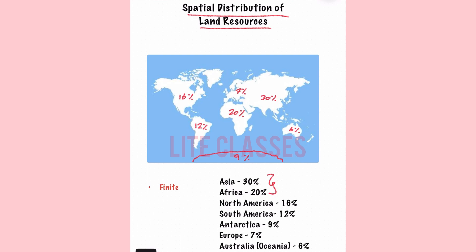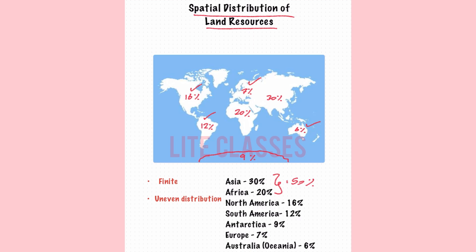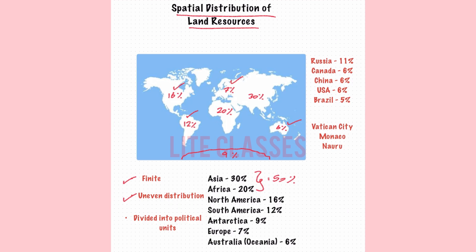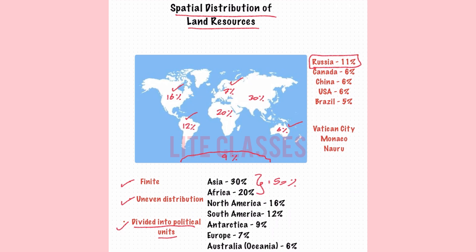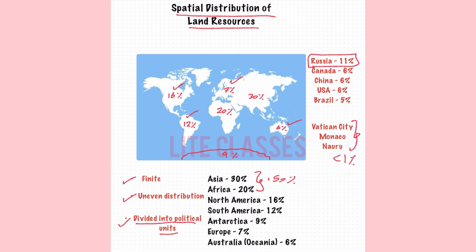Continent-wise, Asia and Africa together account for approximately 50% of the world's total land. North America accounts for 16%, South America 12%, Europe 7%, and Oceania 6%. So land resources across the world are not just fixed but also unequally distributed. They are further divided into political units, with countries like Russia having more than 10% of the world's land, while some of the smallest countries like Vatican City, Monaco, and Nauru together have less than 1% of total land resources.